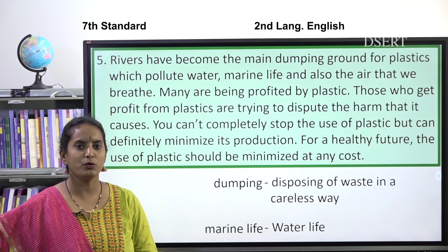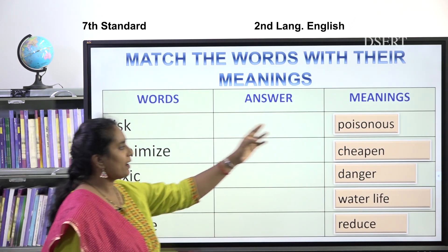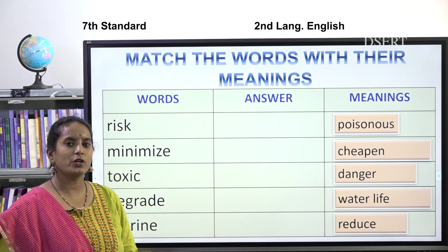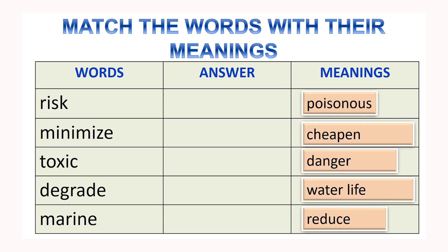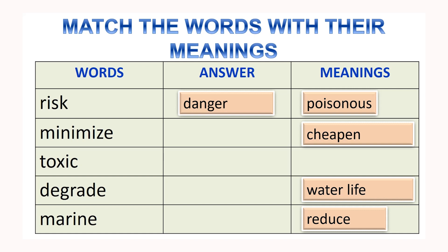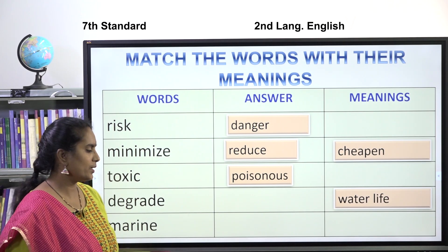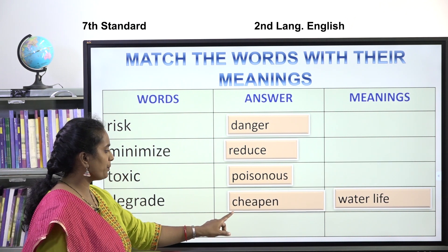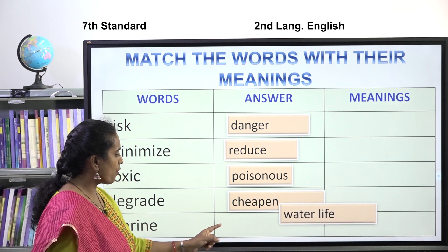Now here is an activity for you. You have to match the words with their meanings. I have given you words on one side and their meanings on the other side. Let's check the answers: risk means danger; minimize means reduce; toxic means poisonous; degrade means cheapen; marine means water life.